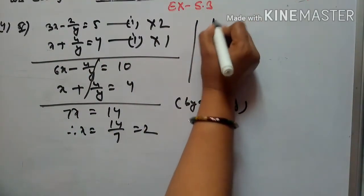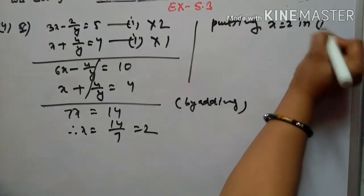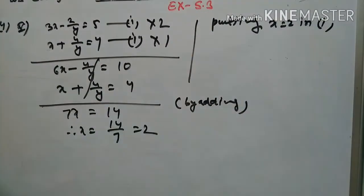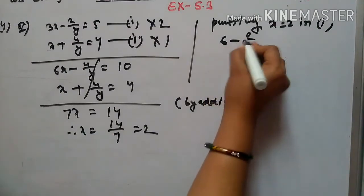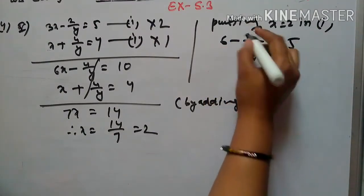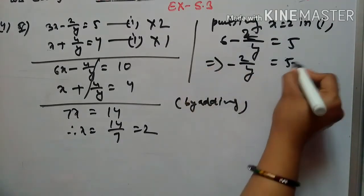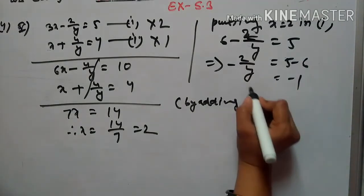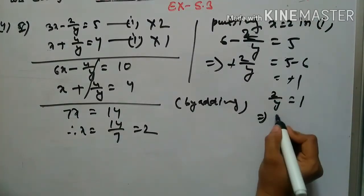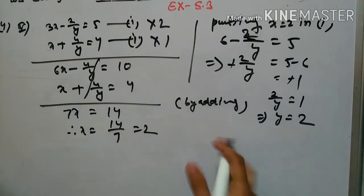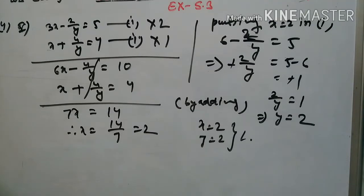Now putting x = 2 into equation 1: 3x - 2/y = 5, so 3 × 2 - 2/y = 5, giving 6 - 2/y = 5, therefore -2/y = 5 - 6 = -1, so 2/y = 1, meaning y = 2. So x = 2 and y = 2 is the required solution for question number 5.